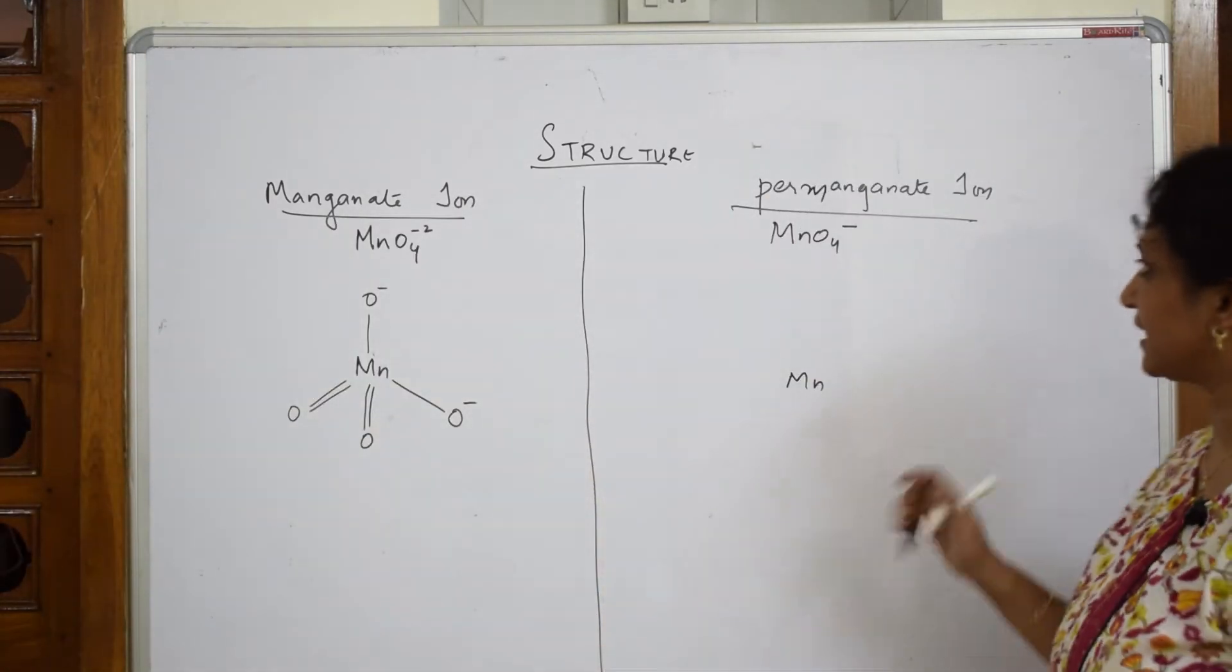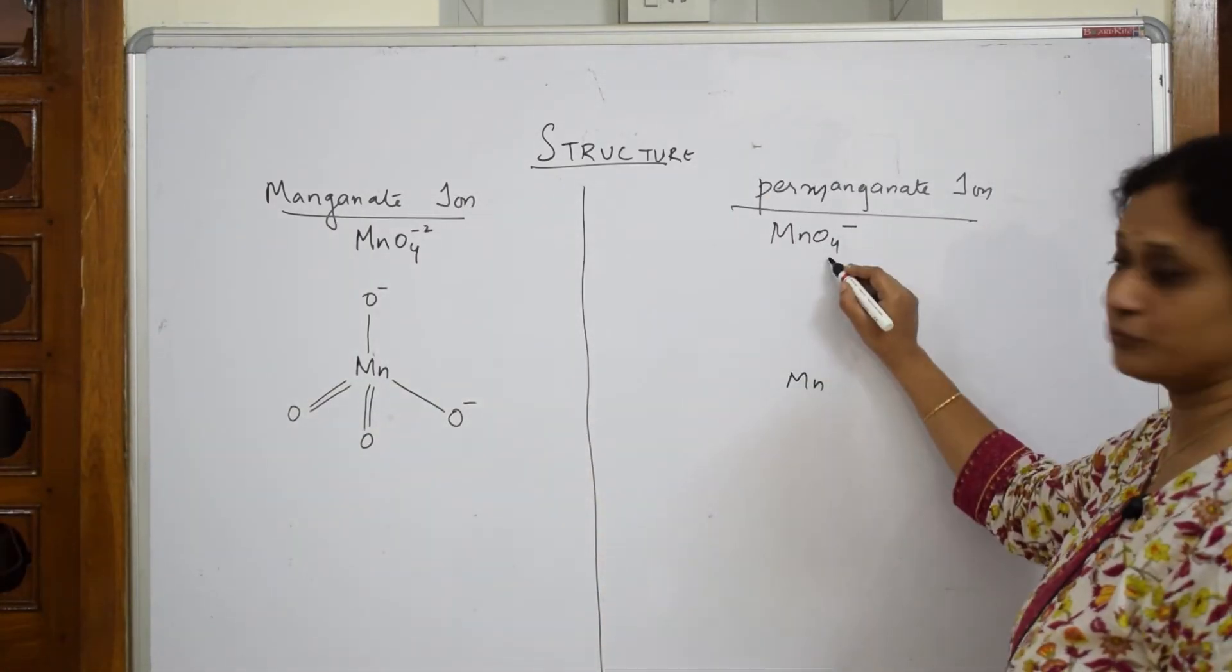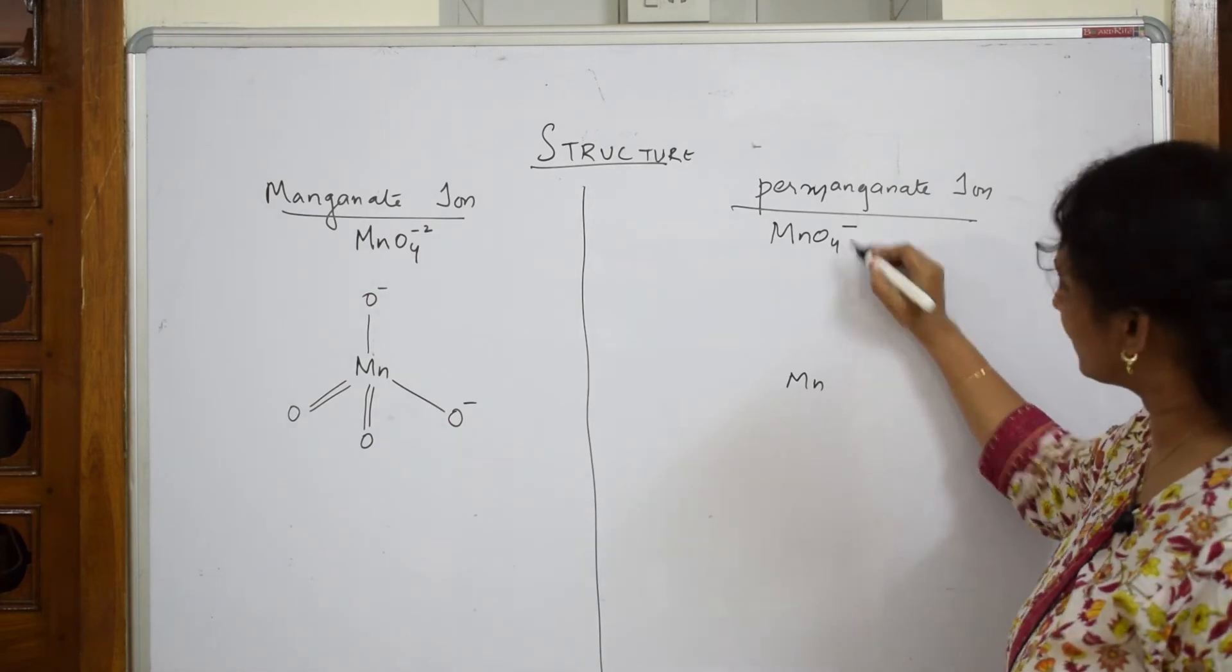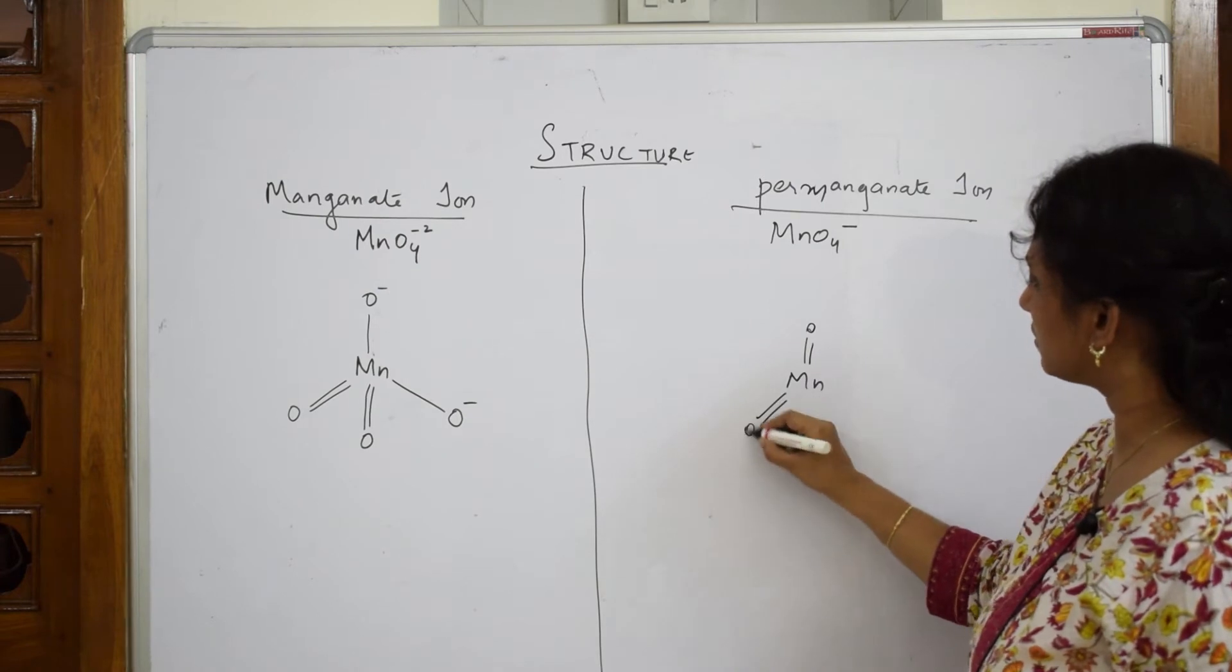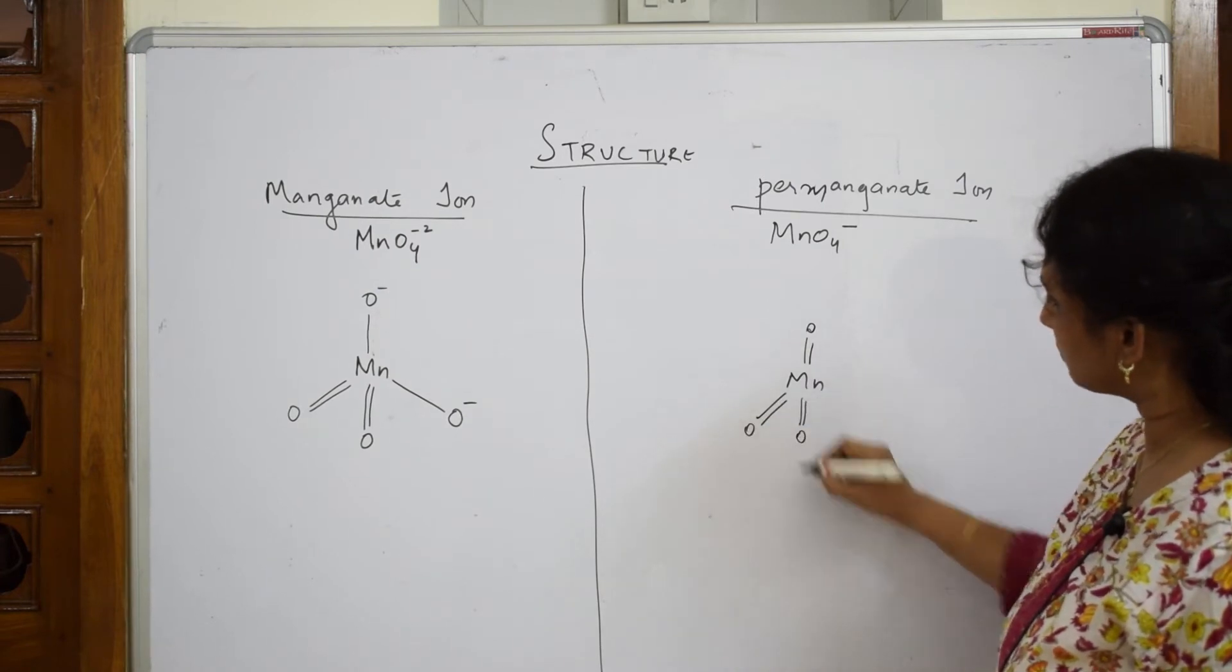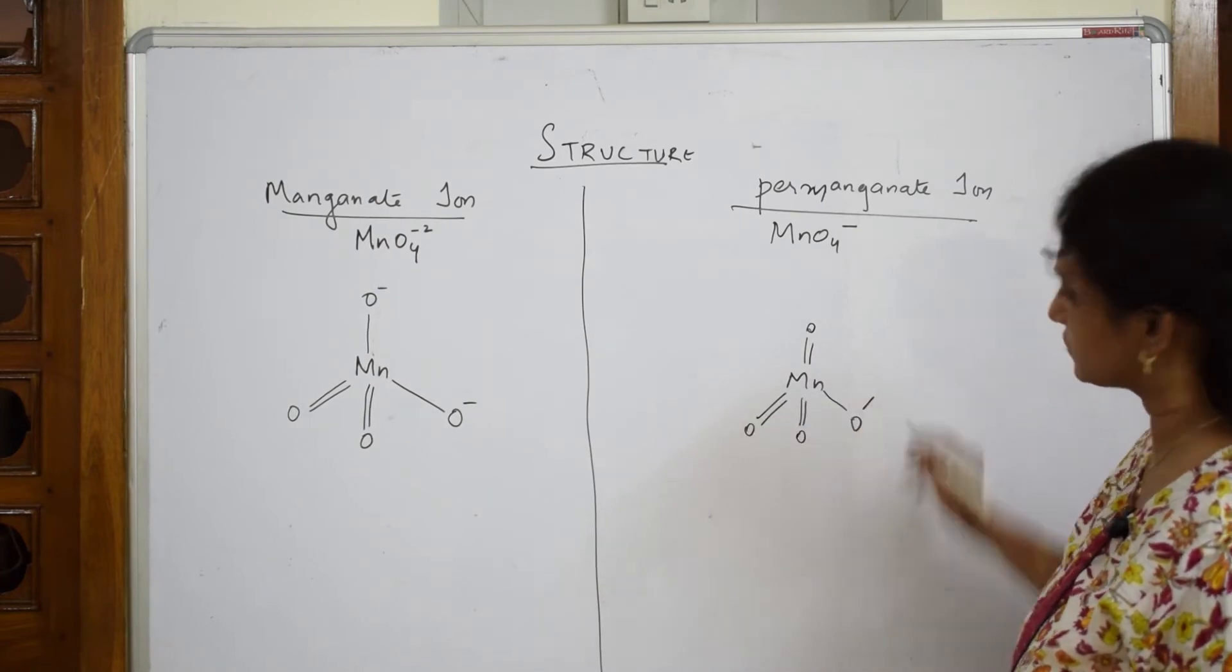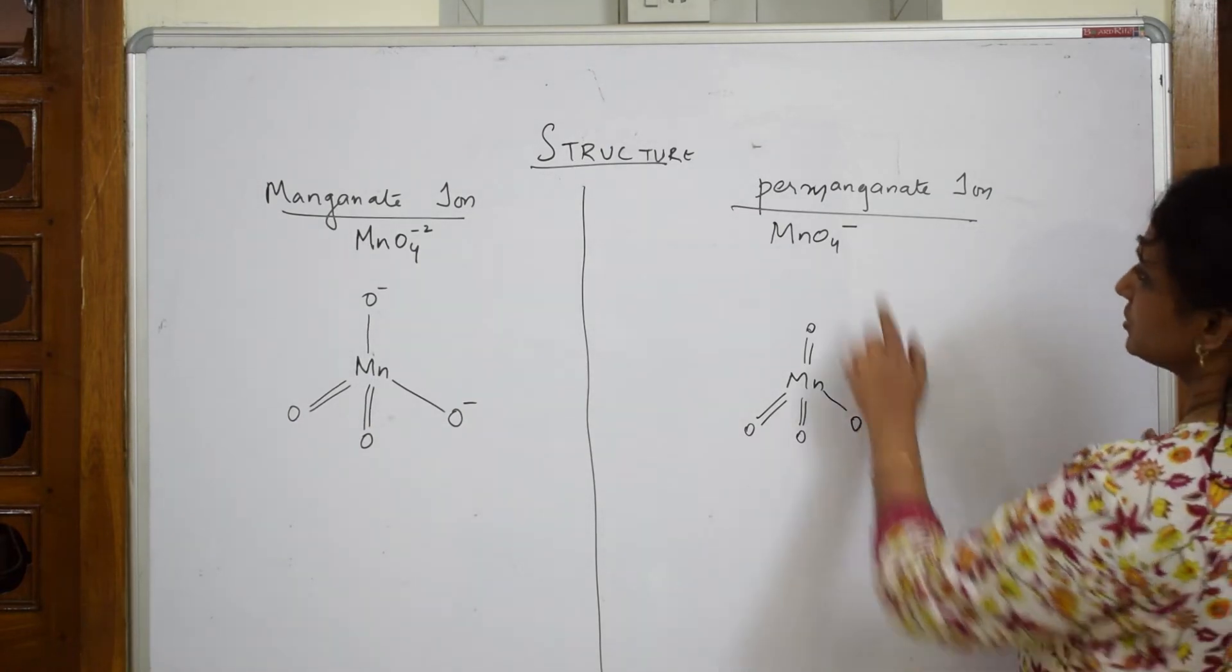Now, when I have to come back to permanganate ion, the same thing. Here, there is only one oxygen atom with minus. Observe carefully. One oxygen double bond, one more oxygen double bond, one more oxygen double bond, and the fourth oxygen atom has minus one.